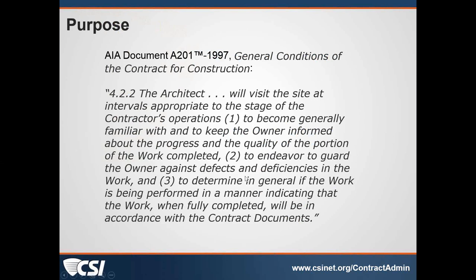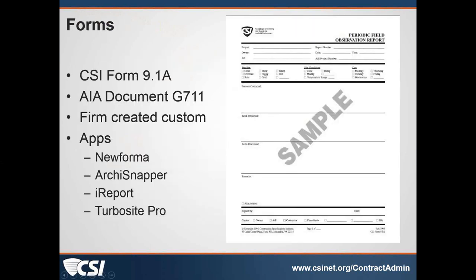Let's keep going to the next slide. You will see a form for a field observation report. What's shown is the form that CSI prepares that you can use. AIA documents also has a form. The CSI form is the 9.1A; the AIA document form is the G711. They are similar in their content. Most firms create their own custom form, and there are apps out there now that are available. There are four listed that you can use to produce the report, and they print out their own format, similar content-wise to the CSI and AIA forms.